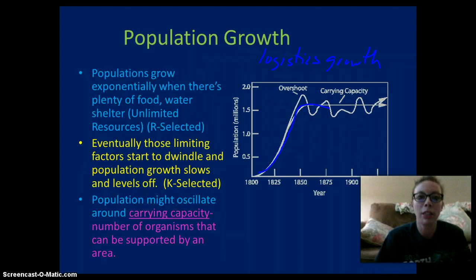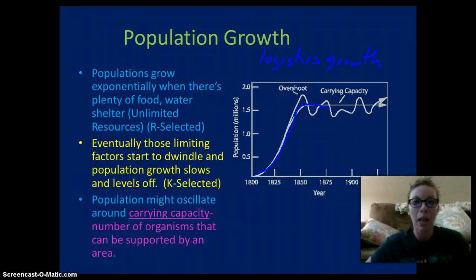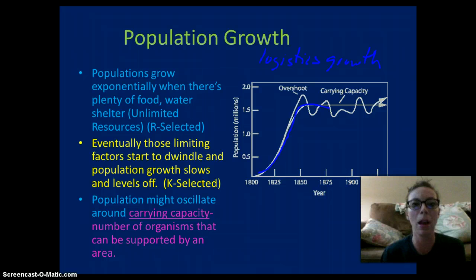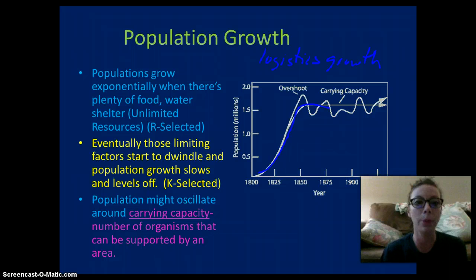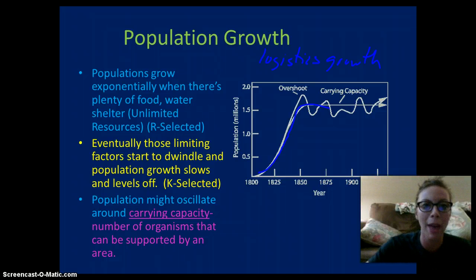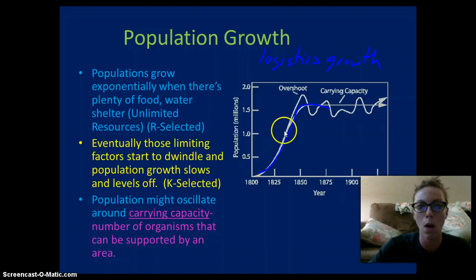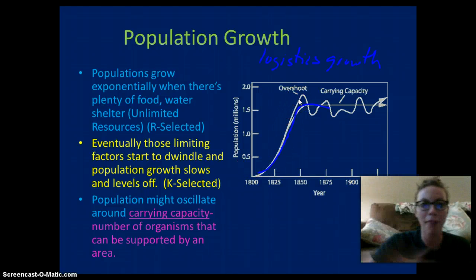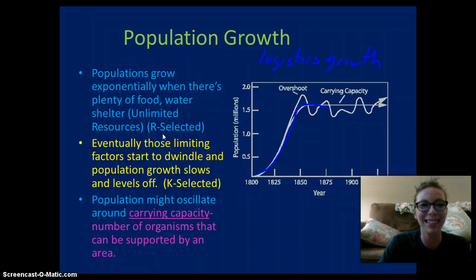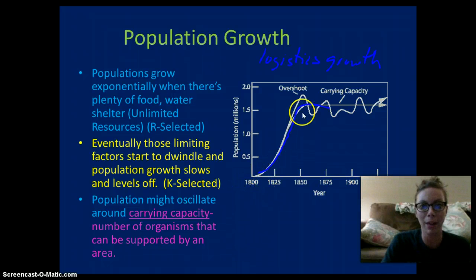Populations are going to grow depending on the availability of resources. If a population has unlimited resources — food, water, shelter — they're going to grow exponentially, showing an exponential or J-curve. R-selected organisms such as insects or bacteria are going to grow exponentially like so.